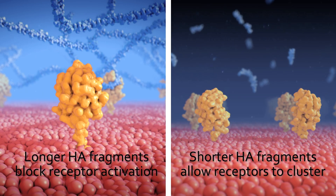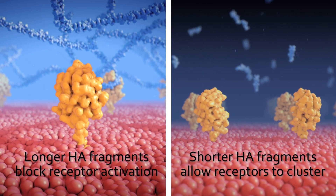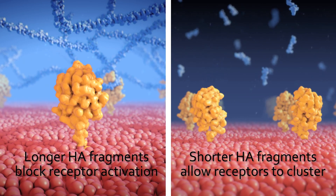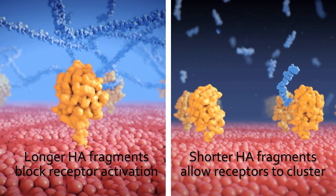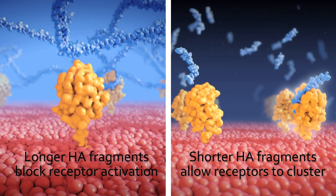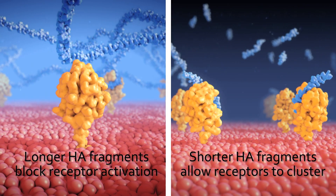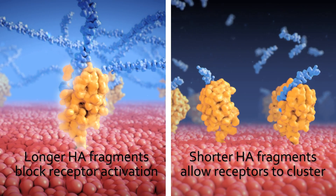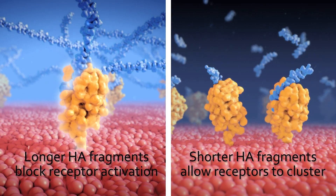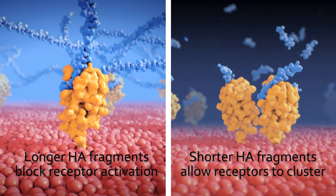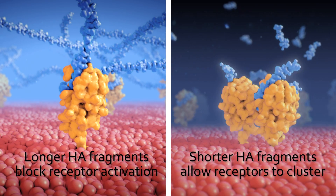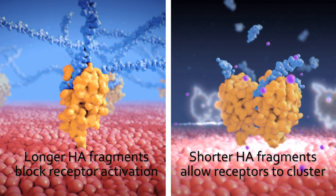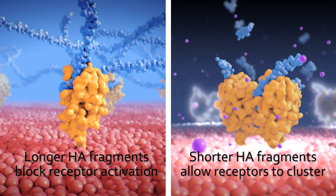Research suggests that differently sized HA molecules may affect receptor organization and the ability to activate specific signaling pathways by cells. Longer HA fragments like those found in healthy tissues block receptor activation, whereas shorter HA fragments allow receptors to cluster together and initiate a cellular response.